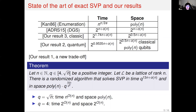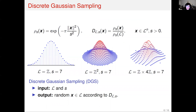Before we introduce how our algorithm works, we should first introduce some lattice tools. First is discrete Gaussian sampling. We define the continuous Gaussian and then the discrete Gaussian distribution, which samples lattice vectors according to the Gaussian distribution. The discrete Gaussian distribution is more or less like the continuous one. We define the corresponding problem — discrete Gaussian sampling — which outputs random lattice points according to the discrete Gaussian distribution, given input lattice L and parameter s.